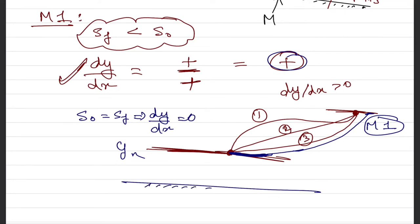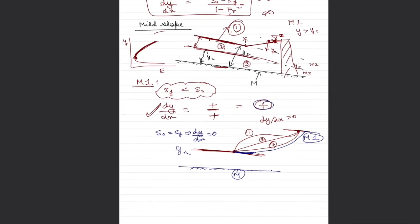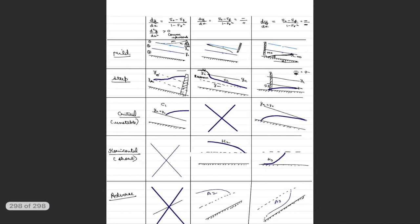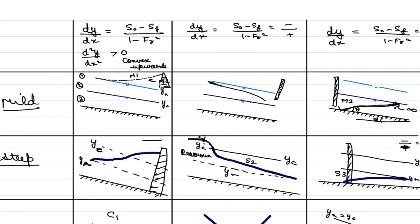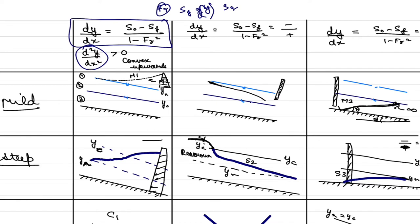I have drawn a table here showing what kind of profiles develop in each case, including curvature. Curvature is governed by the sign of the second derivative, and determining this sign is not straightforward — we assume some functional form for the Froude number and sf's dependence on y. Our primary focus for now is whether water rises or falls, and we will address curvature afterward.